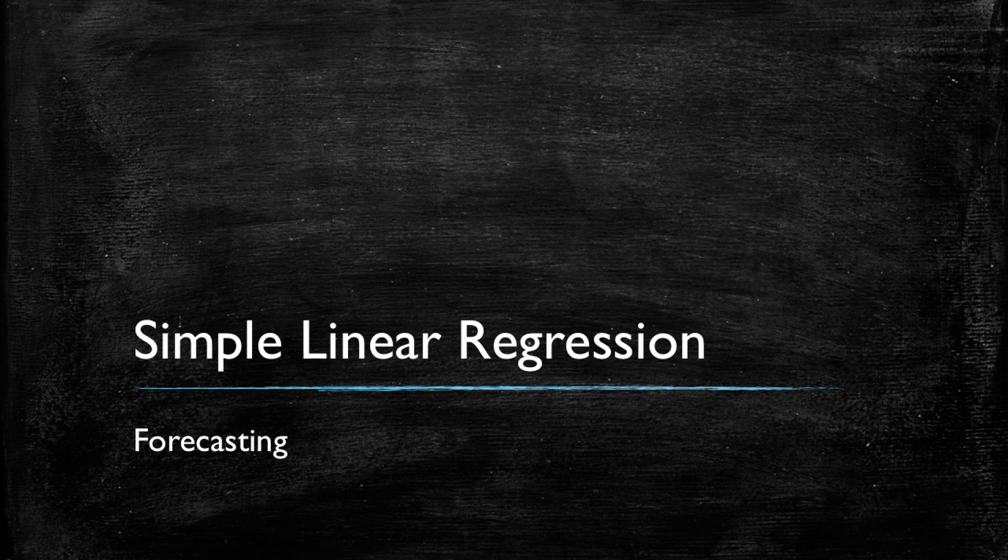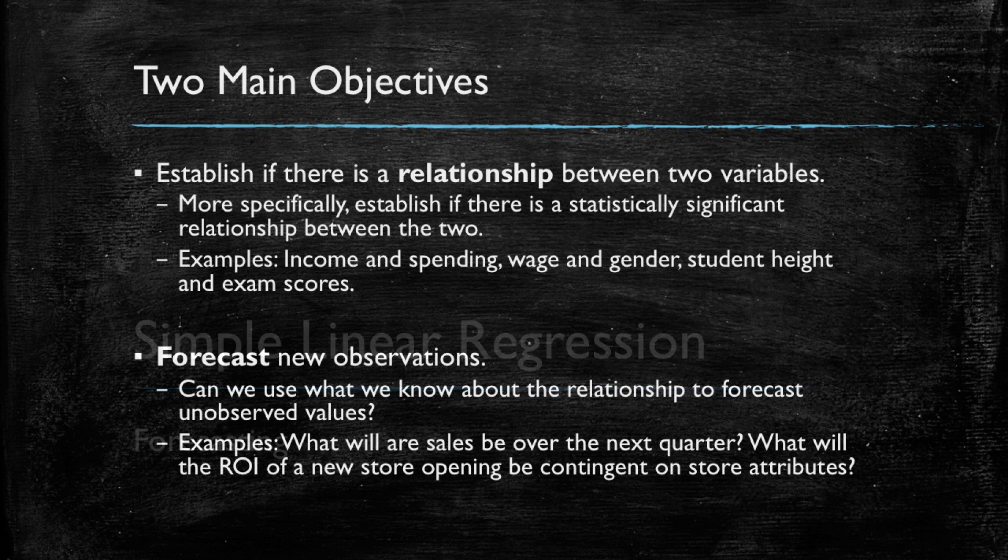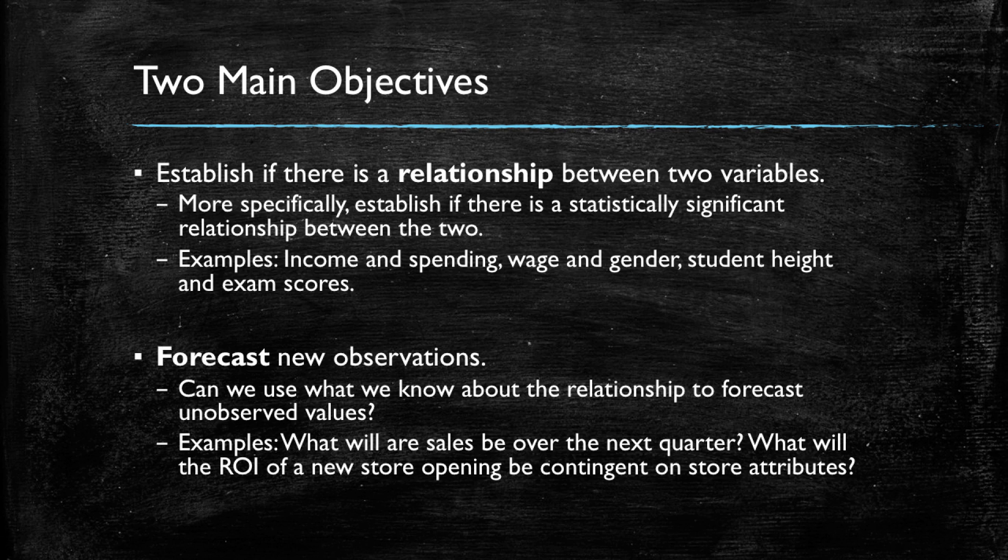Hi, welcome to our final video on simple linear regression. In this video we will be talking about performing forecasts. We start by recalling the two main objectives of regressions: one was to establish if there were relationships between two variables, and the second is to use what we know about these relationships to forecast unobserved values. In this video we will be talking about this second objective.